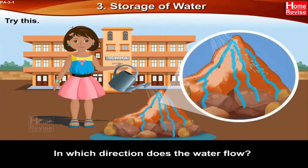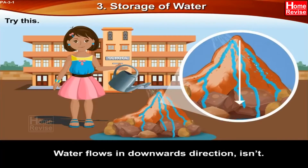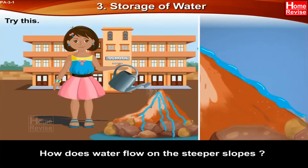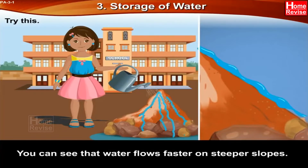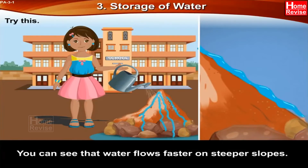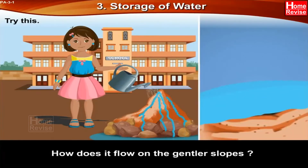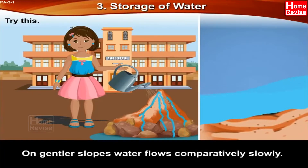In which direction does the water flow? Water flows in a downward direction. How does water flow on the steeper slopes? You can see that water flows faster on steeper slopes. How does it flow on the gentler slopes? On gentler slopes, water flows comparatively slowly.